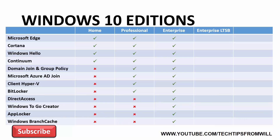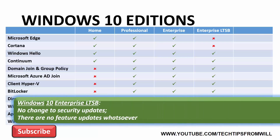Windows 10 Enterprise LTSB is a special edition of Windows 10, only available to Windows 10 Enterprise customers via Microsoft's Volume Licensing Service. In terms of feature set, Windows 10 Enterprise LTSB is comparable to Windows 10 Enterprise. The only difference is that with Windows 10 Enterprise LTSB, there are no Cortana or Microsoft Edge features. In terms of updates, Windows 10 Enterprise LTSB receives security updates in exactly the same way as the other editions, and once again the user cannot say no to security updates.